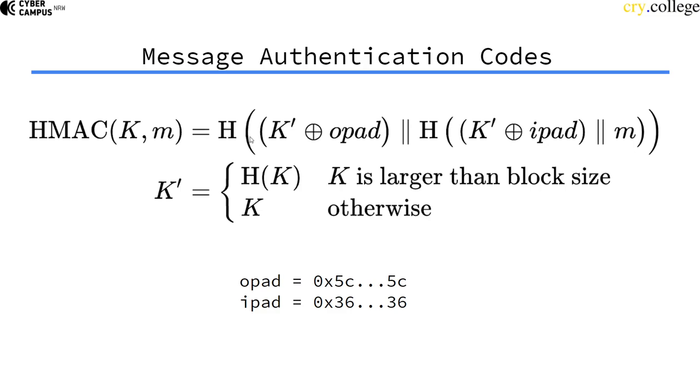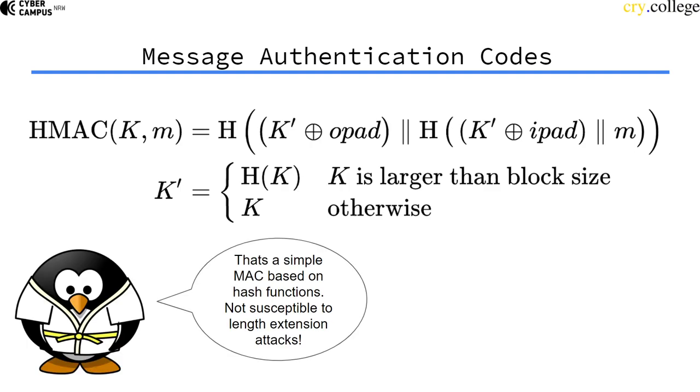Now this key K prime is just the supplied key, or a hash value of the key if the key is too long—if the key is longer than the block size of the underlying compression function.